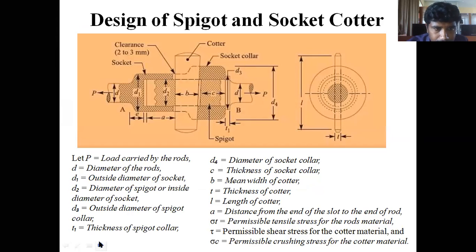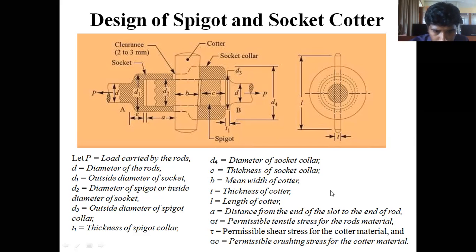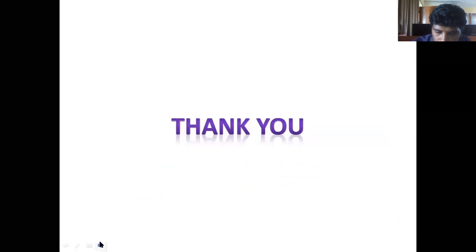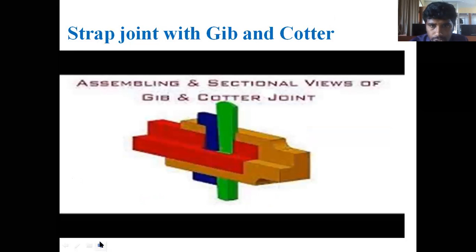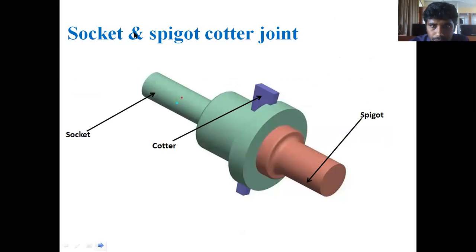Coming to the parameters: d is the diameter of the rod, d1 is the outside diameter of the socket, d2 is the inside diameter of the socket or spigot, l is the length of the cotter, and t is the thickness. In the next class, we'll study how to draw all three kinds of cotter joints and their assembly parameters. Hope you understood this concept of the types of cotter joints and how they are joined. Thank you.